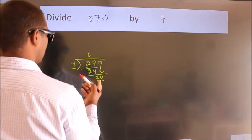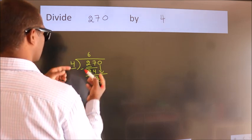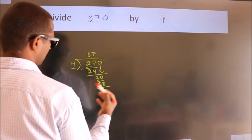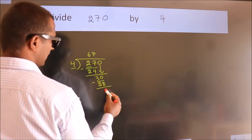A number close to 30 in the 4 table is 4 times 7, which is 28. Now we subtract. We get 2.